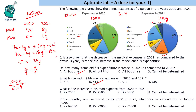Question 3: What is the increase in food expense from 2020 to 2021? Remember — in any DI or quant problem, if we are only given ratios or percentages, we can answer questions about ratios, percentages, or comparisons, but we cannot find absolute values. We do not know whether the expenditure is 8000, 80,000, or 8 lakh. Since we do not know the actual totals, we cannot determine the absolute increase. The answer cannot be determined.